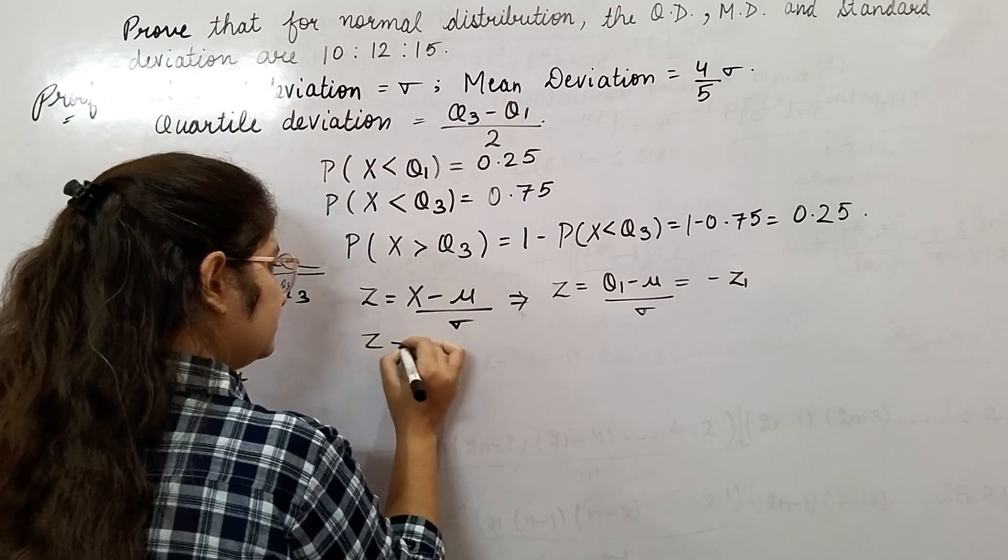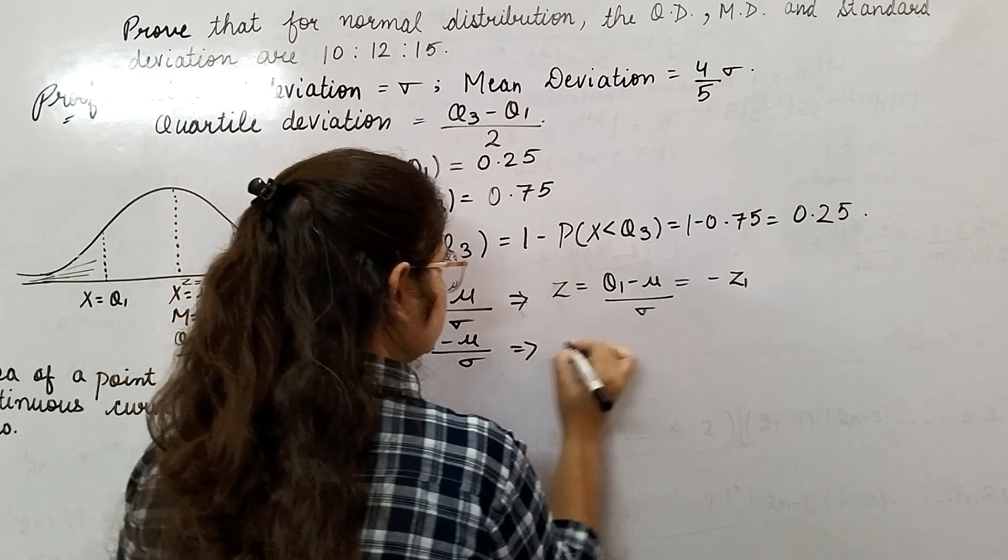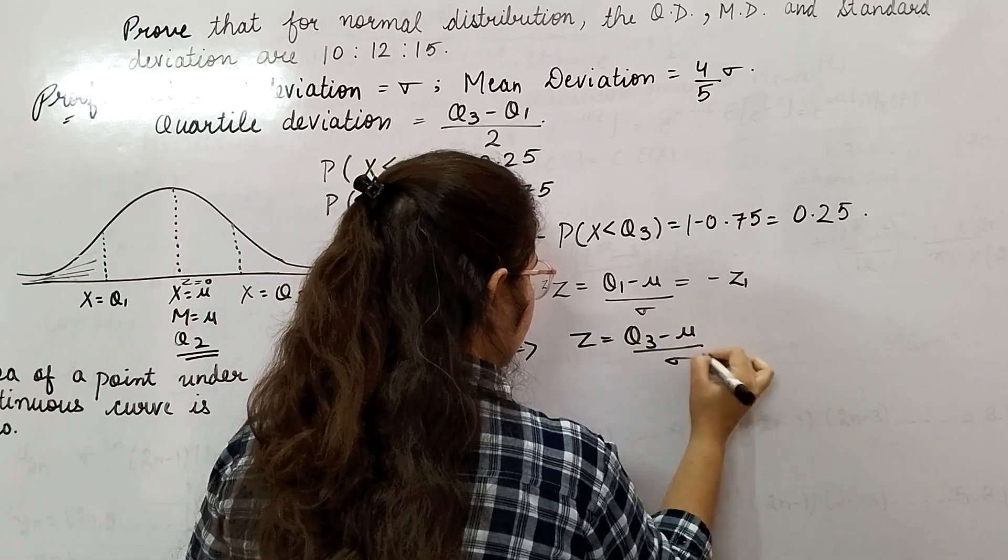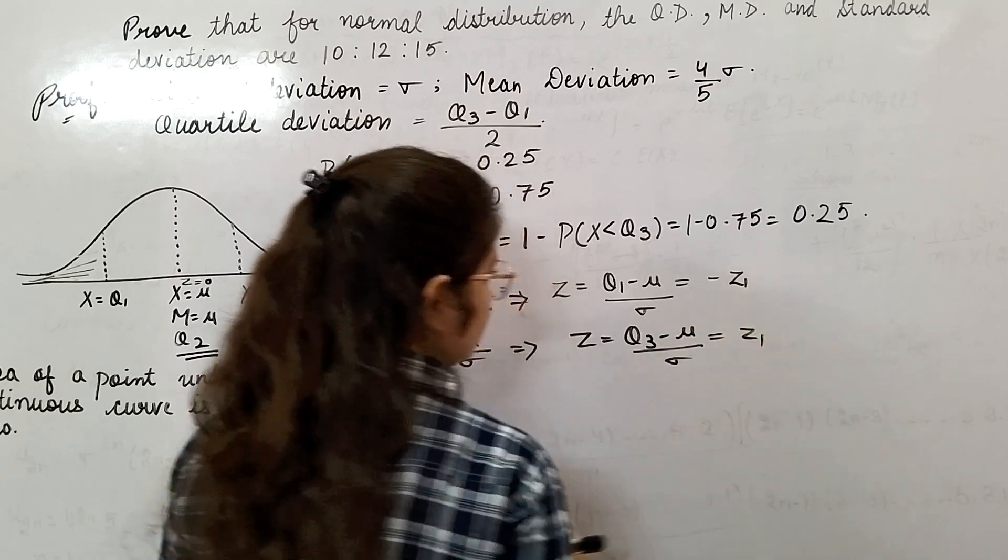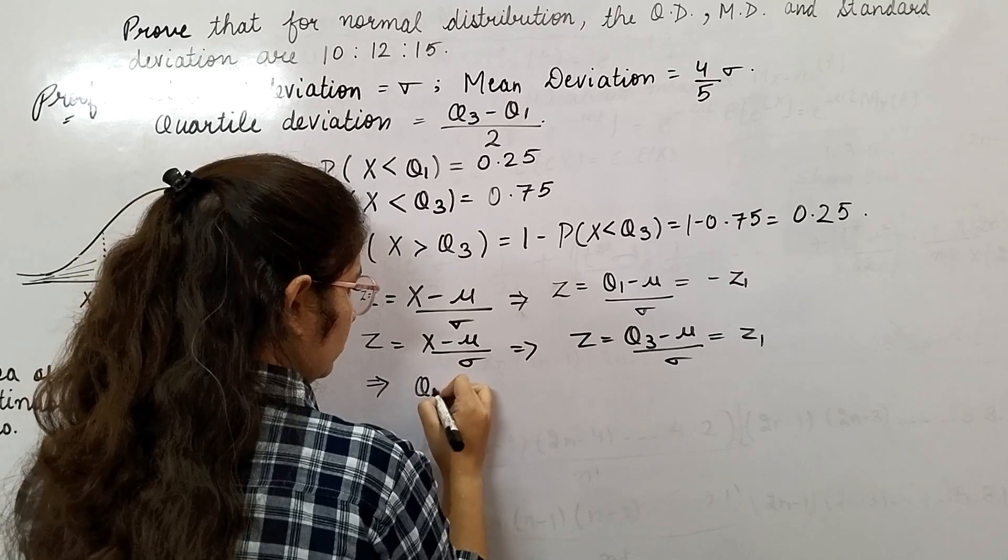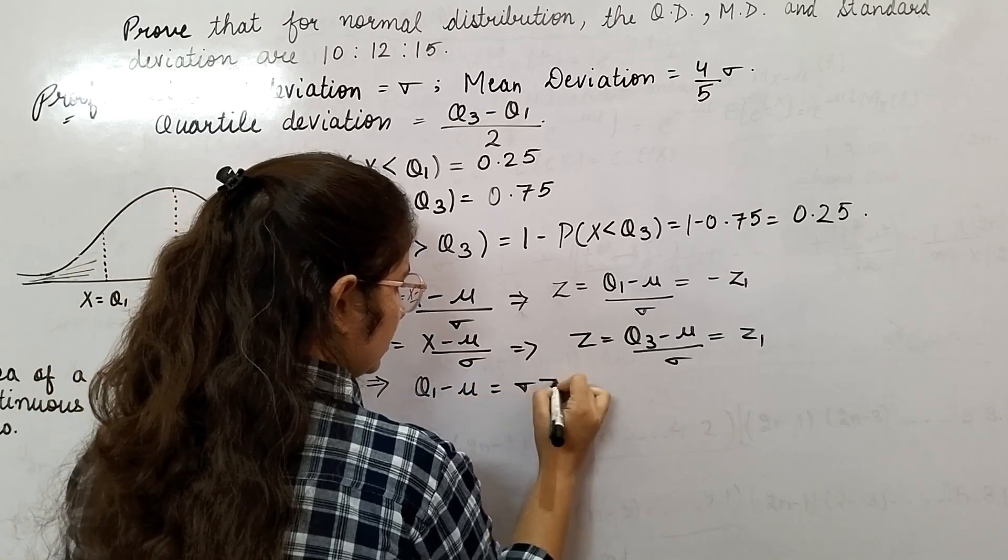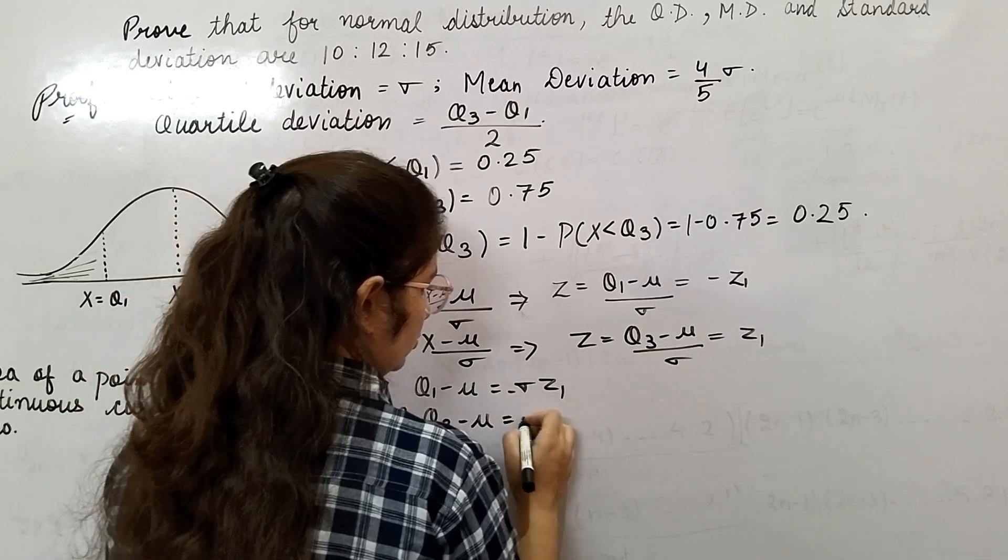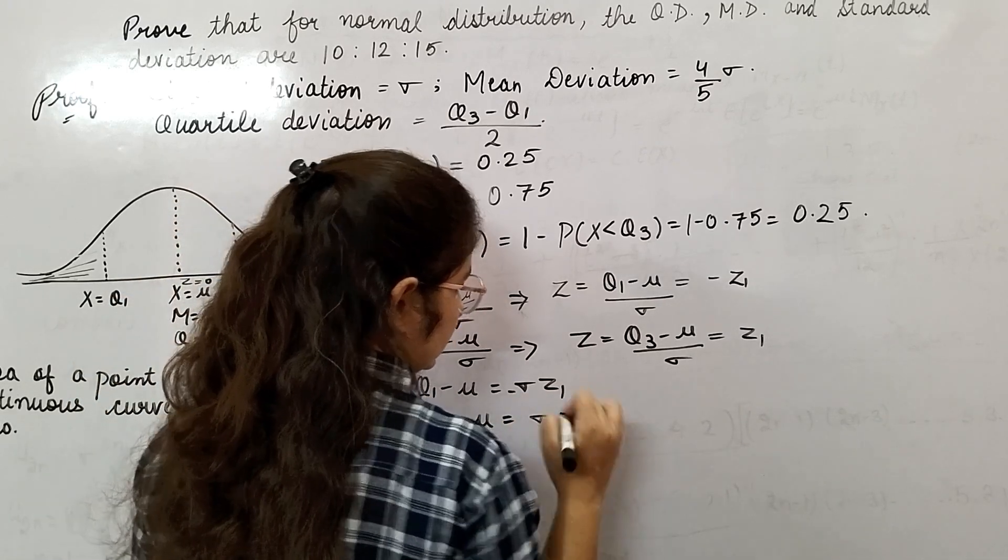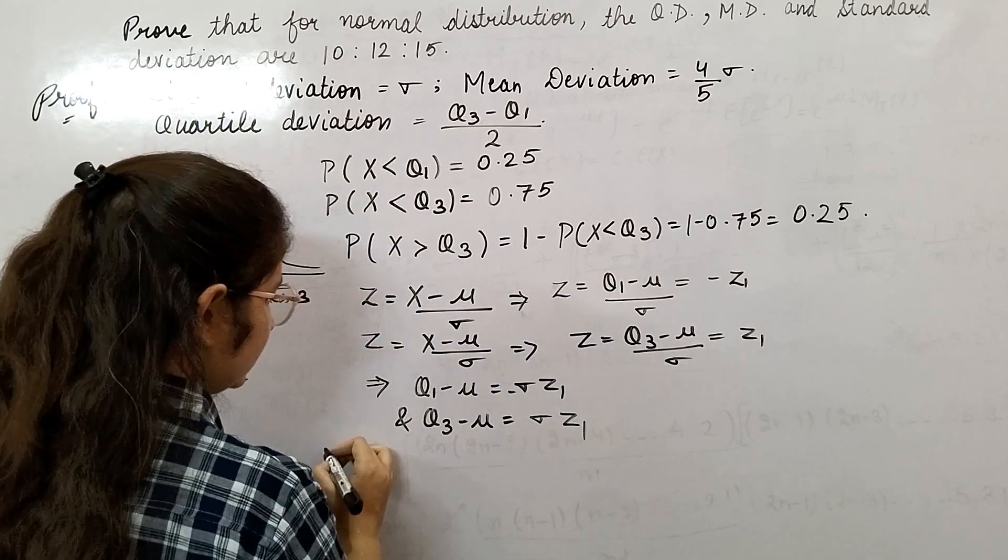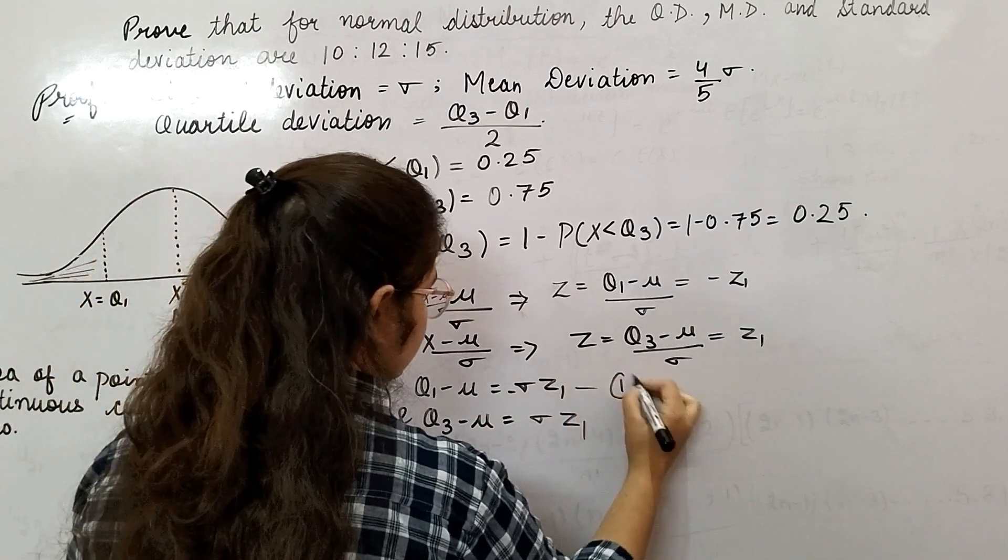Now for q3, q3 minus mu by sigma—it is lying on the right side, so z1. From here what I get: q1 minus mu is equal to minus sigma z1, and q3 minus mu is equal to sigma z1, with a plus sign. Now add these. Name them as 1 and 2.